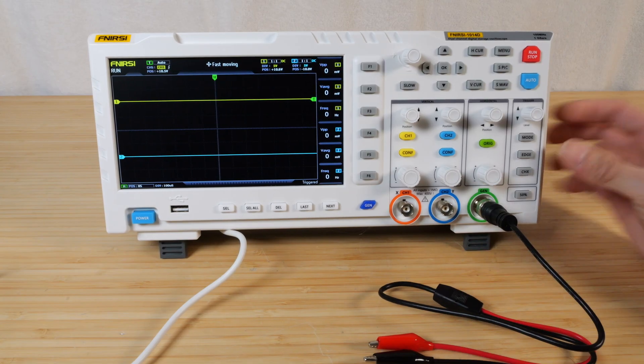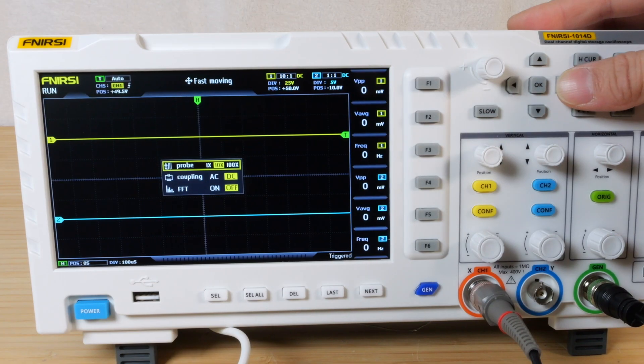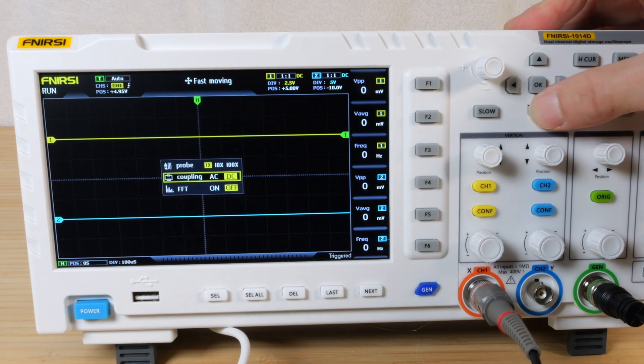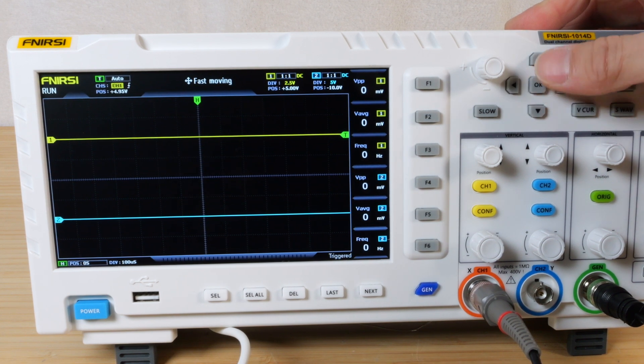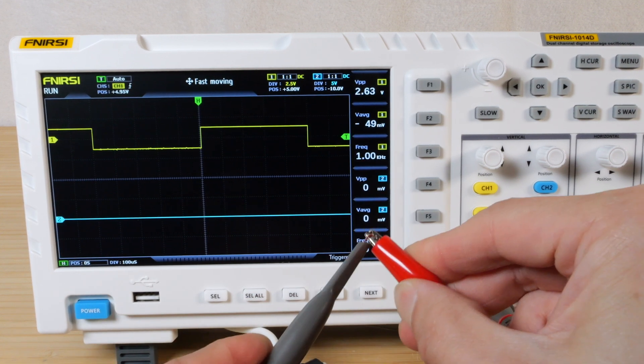Let me connect the function generator output, the channel 1 probe. Configure the channel 1. We can choose 1x, 10x, or 100x here. I'll just do 1x, DC, FFT off. We can do FFT. And I will just connect the function generator output to channel 1.